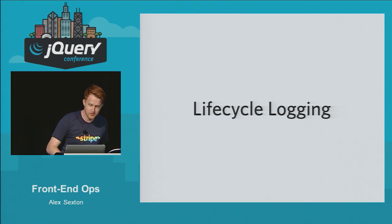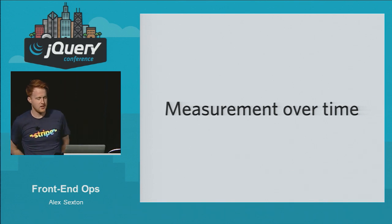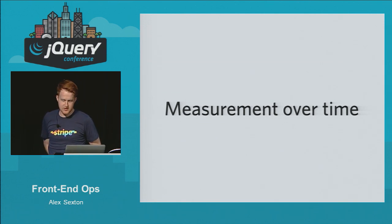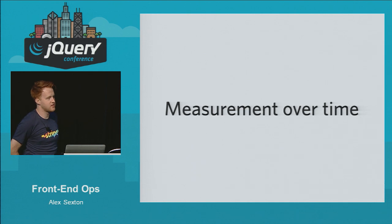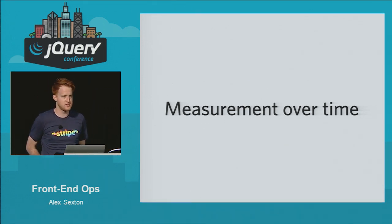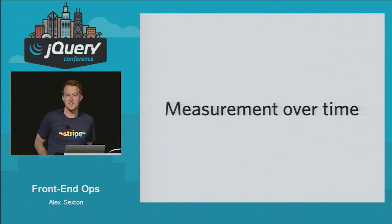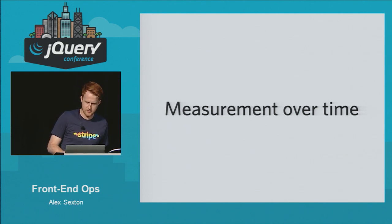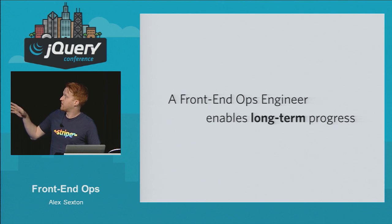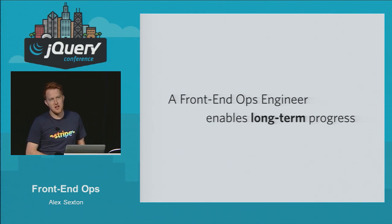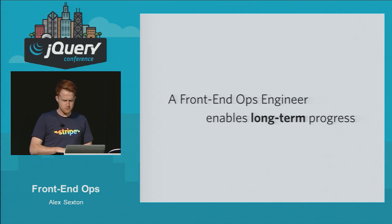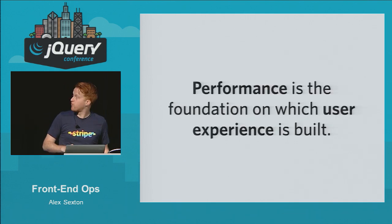Lifecycle logging is something to help developers know how your application works. Old PHP code from 1996 has lifecycle logging — you can turn on logging levels to see exactly what order things run in and what context they're in. And then it's 10 years later and JavaScript people still don't do that. Front-End Ops enables long-term progress; it makes an application outlast the people and features it was originally devised for.